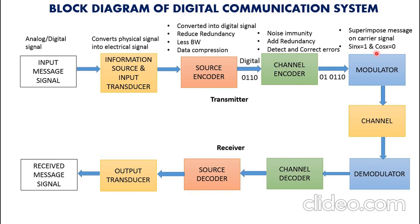It travels through the channel or medium. ASK, FSK, PSK, and QPSK are used for this modulator. Now the channel — the communication channel is the physical medium that is used for transmitting signals from transmitter to receiver. In a wireless system, this channel consists of the atmosphere, telephony, optical channels, underwater acoustic channels, etc.